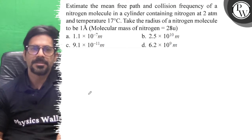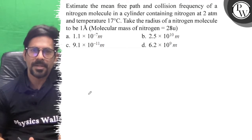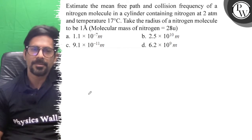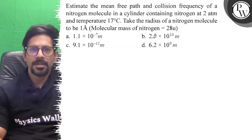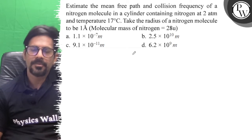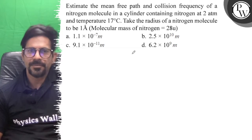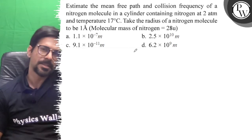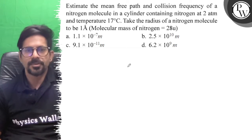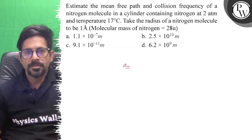Let's see the question: estimate the mean free path and collision frequency of a nitrogen molecule in a cylinder containing nitrogen at 280 mmHg and temperature 70 degrees Celsius. Take the radius of nitrogen molecules to be 1 Angstrom.